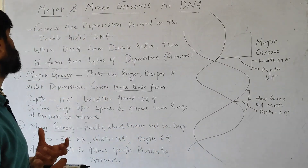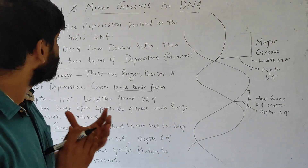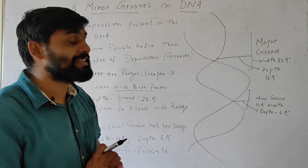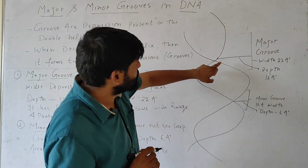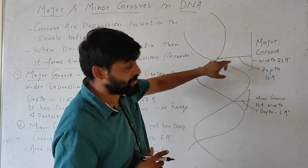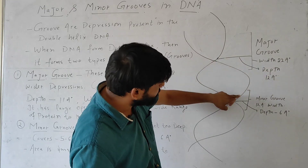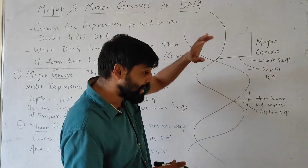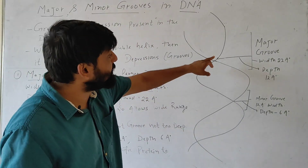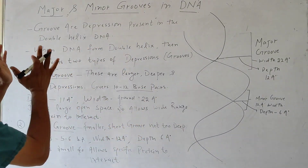So what are these grooves? These grooves are actually depressions present in double helix DNA. When double helix DNA forms its double helix structure, it forms depressions. These depressions are called grooves.